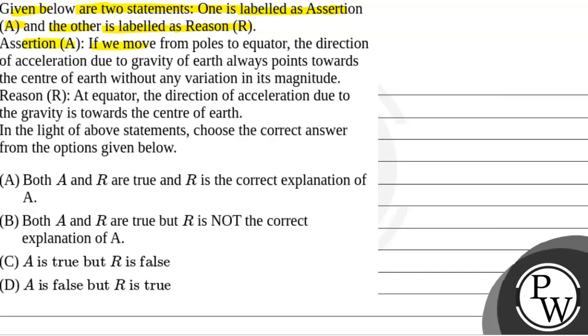Assertion A: If we move from poles to equator, the direction of acceleration due to gravity of earth always points towards the centre of earth without any variation in its magnitude.